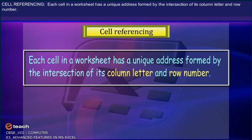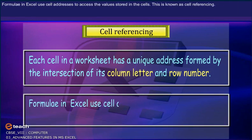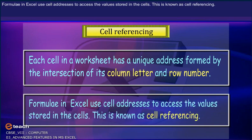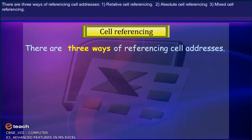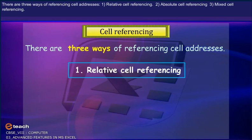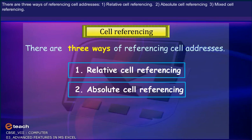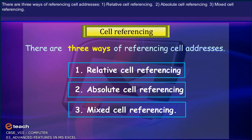Each cell in a worksheet has a unique address formed by the intersection of its column letter and row number. Formulas in Excel use cell addresses to access the values stored in the cell. This is known as cell referencing. There are three ways of referencing cell addresses: 1. Relative cell referencing. 2. Absolute cell referencing. 3. Mixed cell referencing.